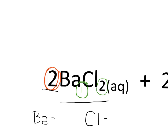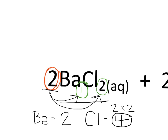So if we multiply that coefficient times the subscript for Ba — two times one — we know there are two atoms of Ba. If we take this coefficient and multiply it by the subscript of two that we see on Cl, we get two times two, which is a total of four Cl atoms and two Ba atoms in this compound.